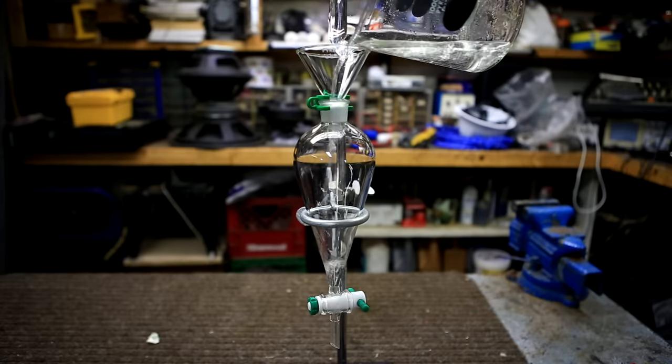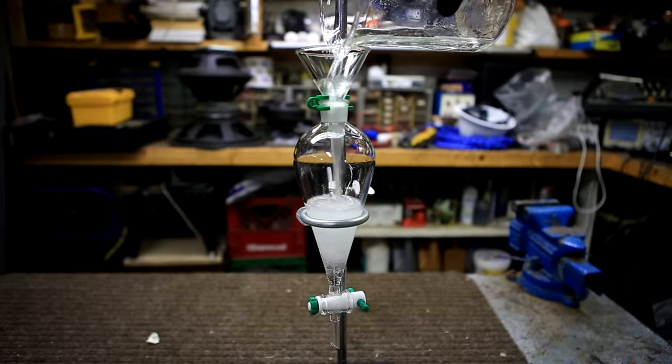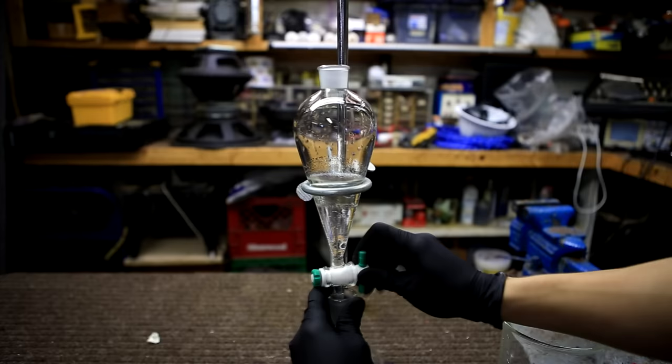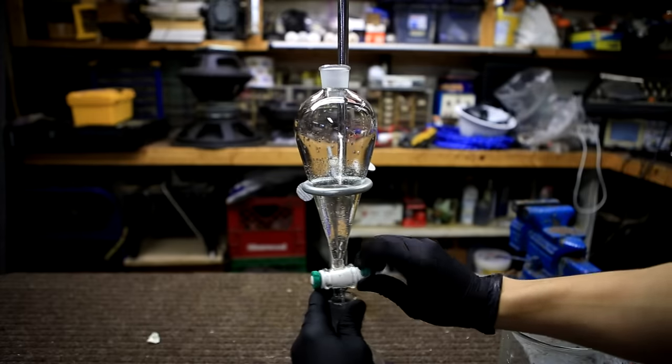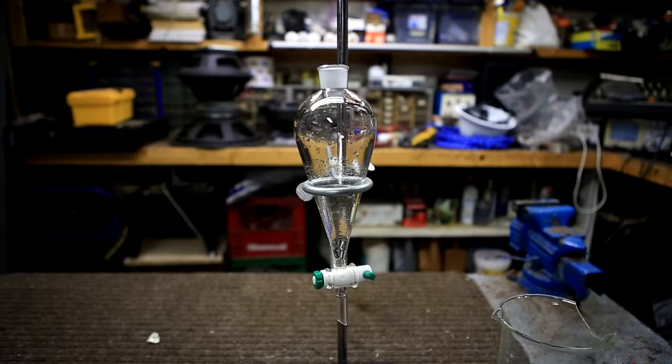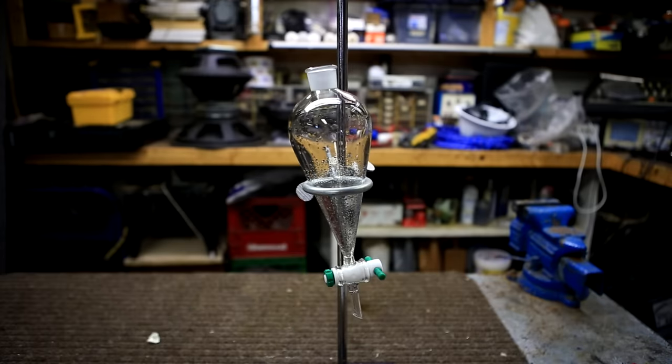Decant off as much of the aqueous layer as possible and then add the rest to a separatory funnel. Allow the two phases to separate and then drain the lower chloroform layer. Add the upper aqueous layer to your waste container.